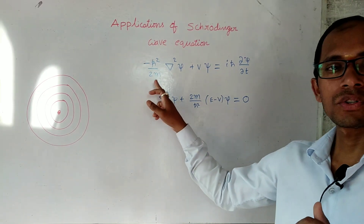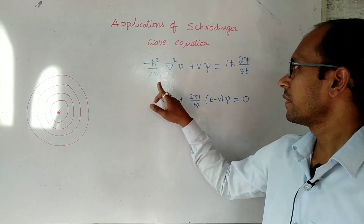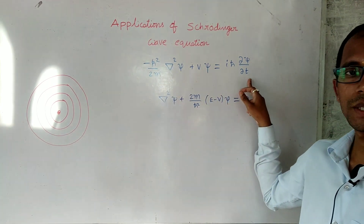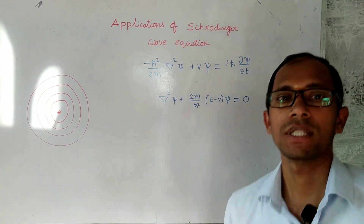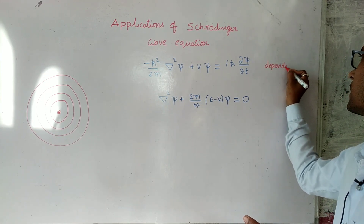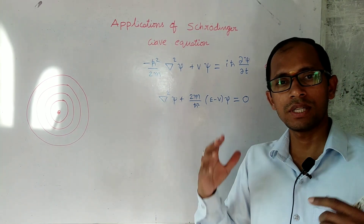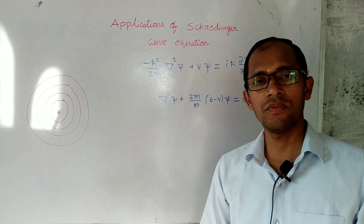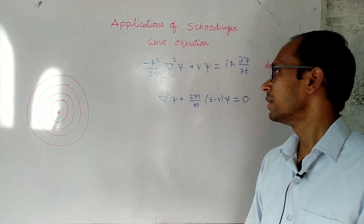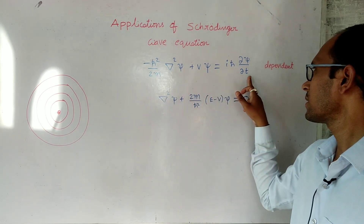First, the Schrödinger time-dependent wave equation — which we discussed in the previous section — is written as: the second derivative of psi with respect to x, multiplied by h-bar squared over 2m, plus V times psi, equals ih-bar times the partial derivative of psi with respect to t. This is the Schrödinger time-dependent wave equation. Basically, this equation describes the wave — and automatically the wave function — which always varies with time. So the time factor is present. The generalized wave equation is the Schrödinger time-dependent wave equation because it has a time factor.